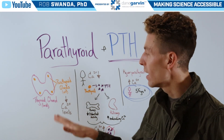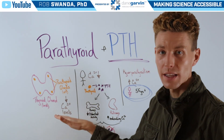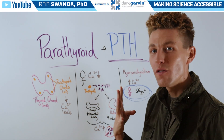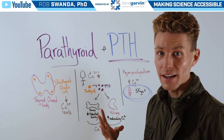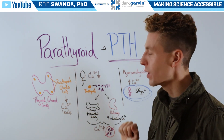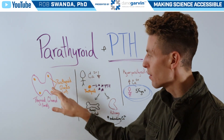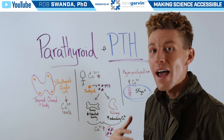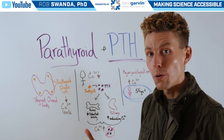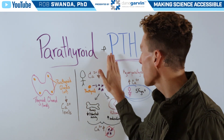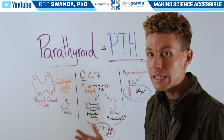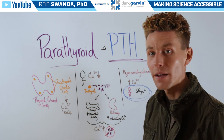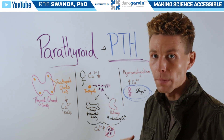If we look at the back of the thyroid gland that sits in our neck, we're actually going to find four other glands known as parathyroid glands, present in the corners of the thyroid gland. They're responsible for producing a hormone known as parathyroid hormone, or PTH, which is essential for regulating calcium levels in our bodies.